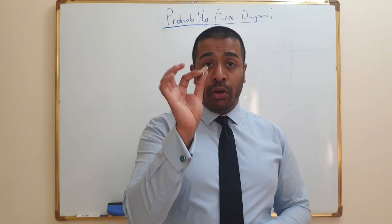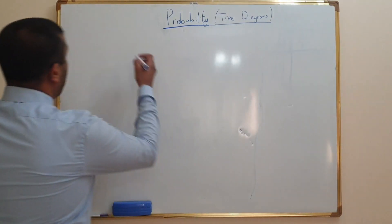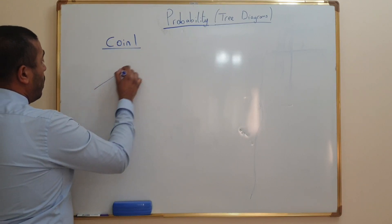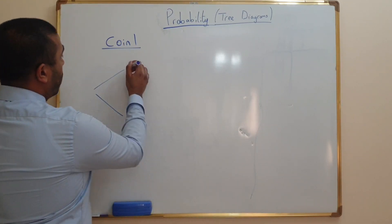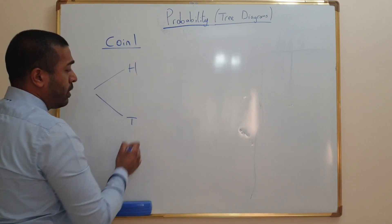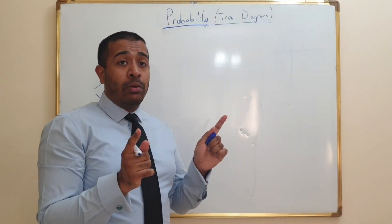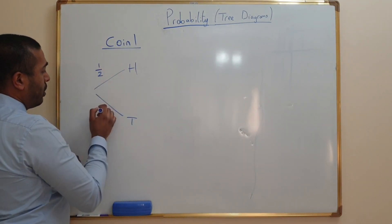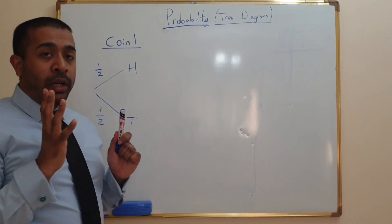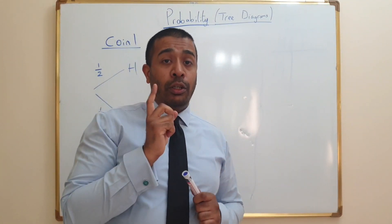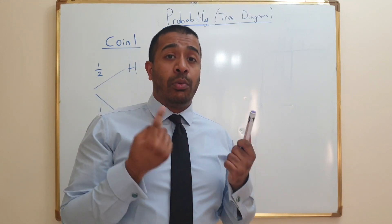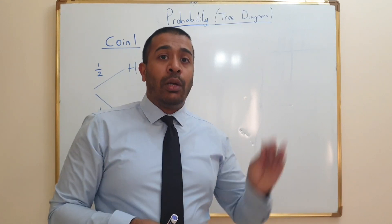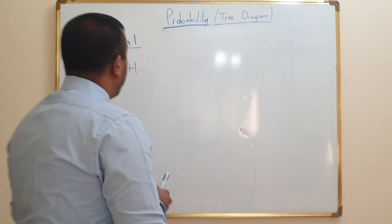Now if I want to list the outcomes of these two coins, I can use a probability tree. We start off with coin number one. The probability of getting heads and tails — those are the only two possible outcomes — and because it's 50/50, it's one half and one half. Don't forget the total outcomes should add up to one: a half plus a half equals one. So the branches for that part of the tree are complete. Now what about the second coin?